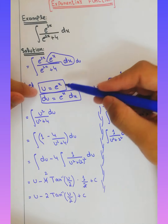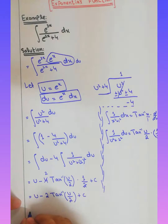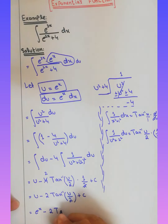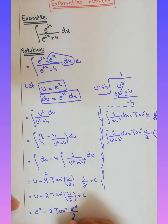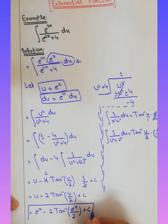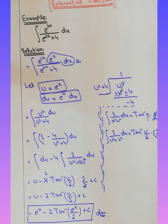Now, since u equals e^x, we substitute back: the final answer is e^x minus 2 times tan inverse of (e^x divided by 2), plus c.